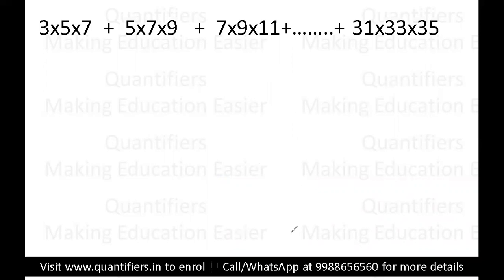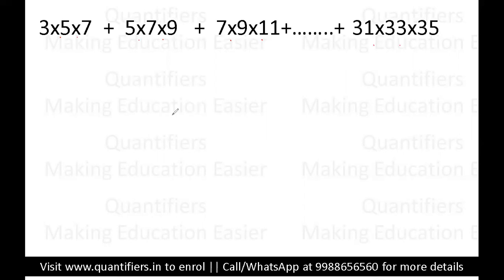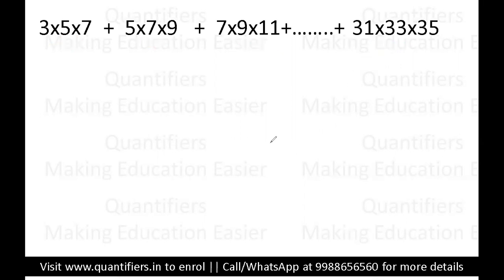Let us understand the series. The most important thing is: first condition — if you look at the series, it is just like an AP. You can see there is a difference of two everywhere. Second condition — if you look at each of the terms, all of the terms have equal numbers of elements. So this series is very symmetric.